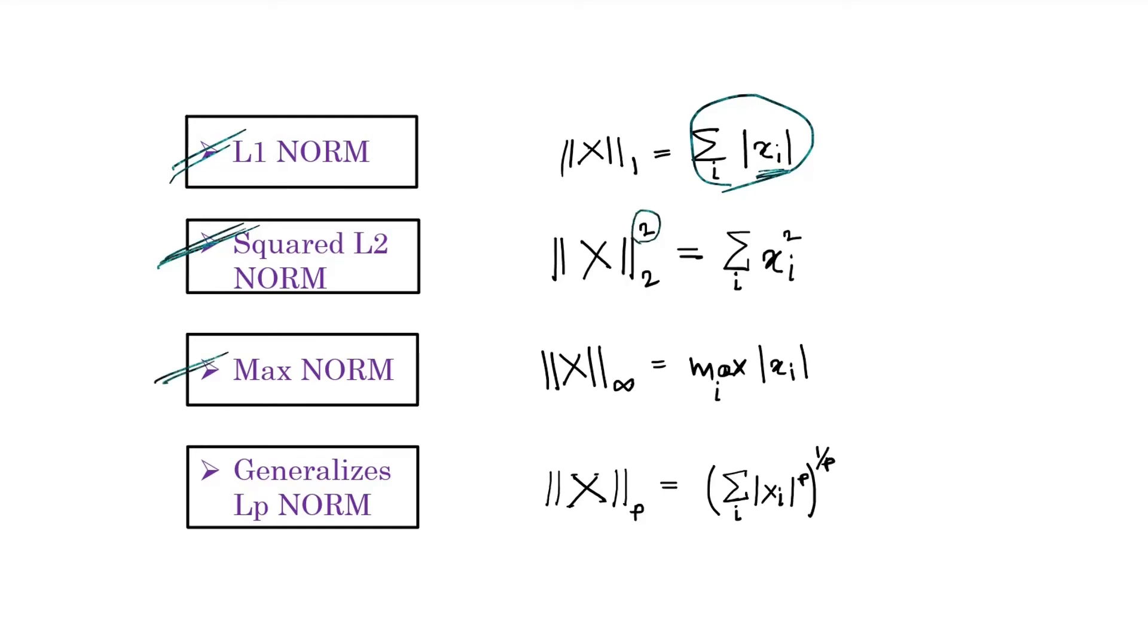Next is max norm. To calculate max norm, you take the absolute value for all the elements, and then among all those elements you consider the maximum number. For example, if you have a vector like [-4, 2, 3], when you consider the absolute value, all values will be positive, and then you consider the maximum value from all the elements, which will be 4 in this case.